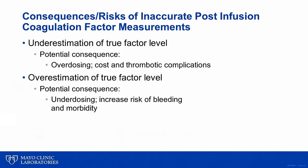The potential consequences of inaccurate measurement of clotting factor concentrates include underestimation of factor levels, which may lead to overdosing of the factor concentrate, increased cost, and an increased risk of thrombotic complications. On the other hand, overestimation of true factor level may result in potential underdosing of the factor concentrate and increasing the risk of bleeding and accompanying morbidity.